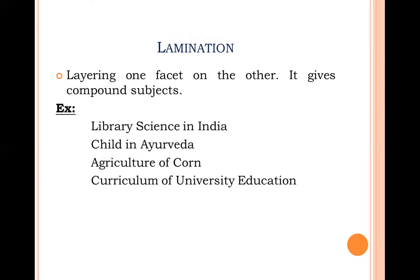Lamination: just as when you laminate a certificate, a plastic cover is placed over and under it, in lamination one subject gets layered over another subject to create new subjects. For example, library science combined with India becomes 'Library Science in India'; Ayurveda combined with child becomes 'treatment of children in Ayurveda'; agriculture combined with corn creates a new laminated subject. These two concepts are laminated to each other to produce new subjects.